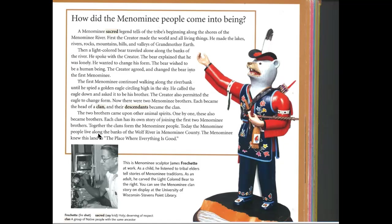Today, the Menominee people live along the banks of the Wolf River in Menominee County. The Menominee knew this land as the place where everything is good. You can take a look at this sculpture here that highlights the bear from the story. The caption reads: This Menominee sculptor, James Frechette, at work. As a child, he listened to tribal elders tell stories of Menominee traditions. As an adult, he carved the light-colored bear shown to the right. You can see the Menominee clan story on display at the University of Wisconsin Stevens Point Library. That's all we have for our reading today.